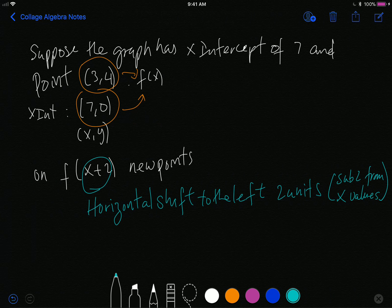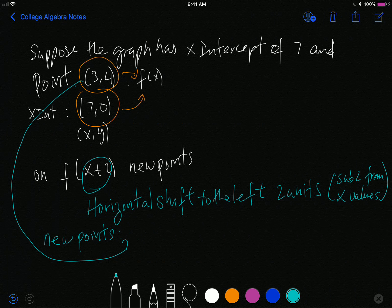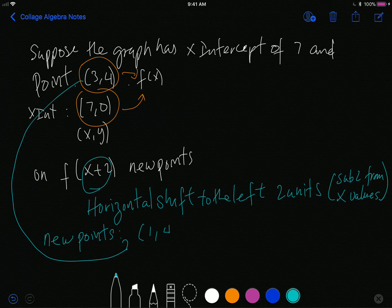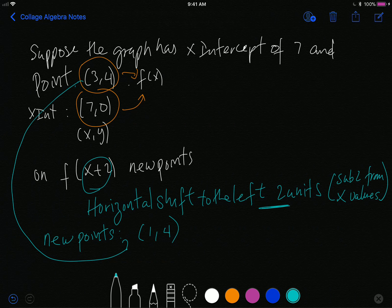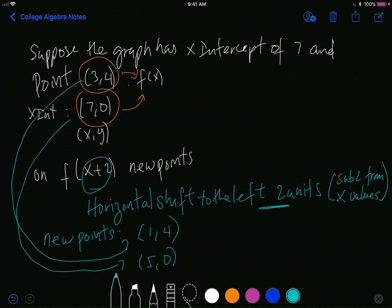And so what that means is that the two points that I have given, I have to subtract 2 from the x-values. And that gives me my new point. So the first one right here will become (1,4) after I subtract the 2, and my x-intercept will become (5,0) after I subtract the 2.